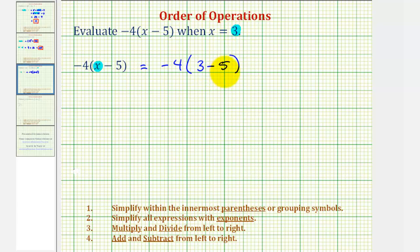And now following the order of operations, for the first step, we'll simplify within the innermost parentheses or grouping symbols, which means for our expression, we'll simplify or evaluate three minus five.